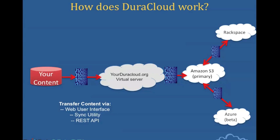Once you push your content into DuraCloud, the primary copy of your content would be managed in Amazon S3. You can then make an additional copy of your content in Rackspace. We're currently looking at integrating Azure as well as, most recently, San Diego Supercomputer. Through the DuraCloud application, you can not only have a copy in a primary store, but you can have copies in secondary stores, and then synchronize your copies across those multiple stores all through the DuraCloud application.